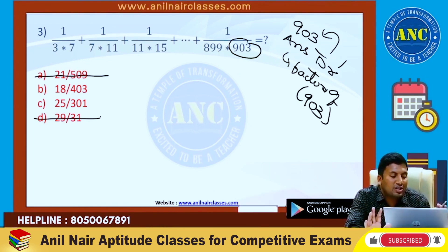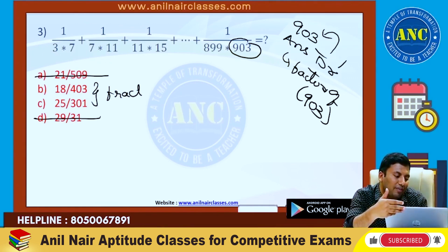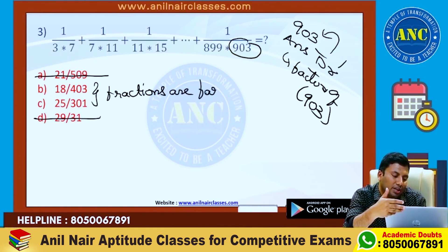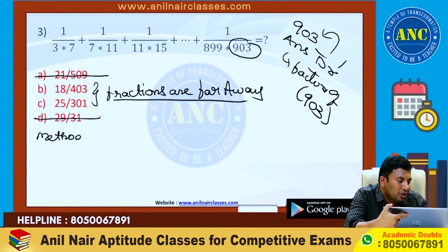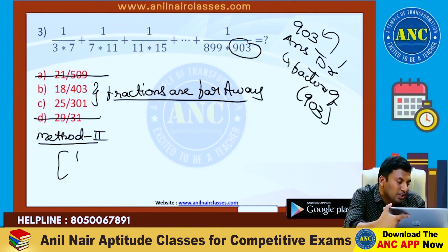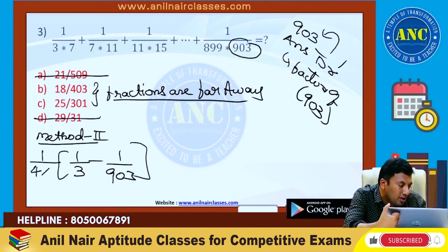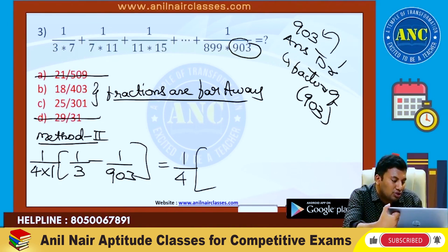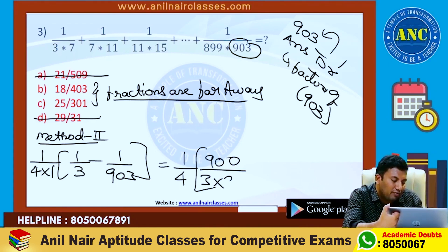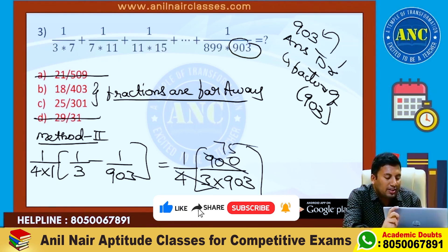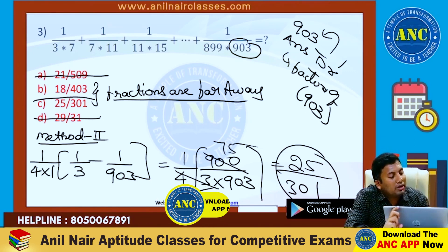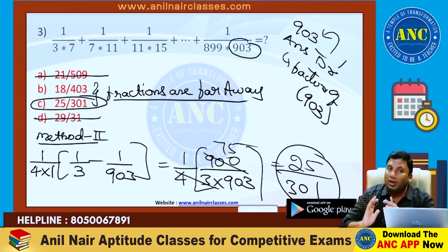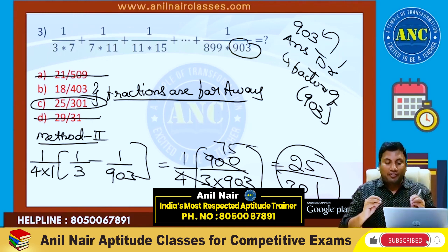Both values — the fractions are far away from each other. If I use method 2: there are 2 numerical values, write the first and the last. The difference between 2 consecutive numerical values is 4. Two numerical values become 1. So 1/4 × (903 − 3) = 900 divided by (3 × 903). That gives 75/903, which simplifies to 25/301. According to method 2, 25/301 is the right answer.